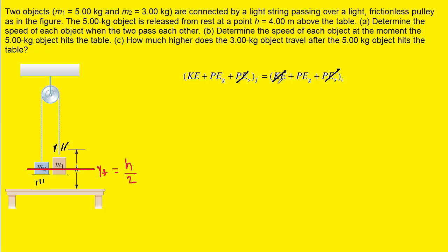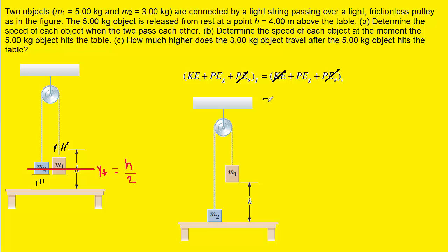Going back to the initial picture, in terms of gravitational potential energy, mass 1 is located at a certain height off the table surface. So on the right-hand side where it says potential energy g initial, we fill in the gravitational potential energy of mass 1. Mass 2 is on the surface, so it has no gravitational potential energy. For mass 1, we have its mass multiplied by g multiplied by its initial height, which is h.